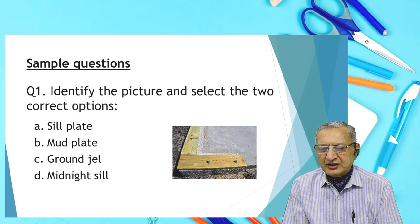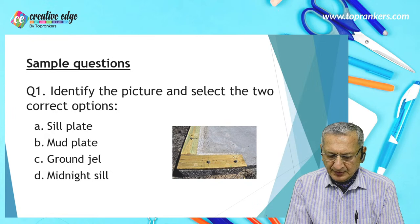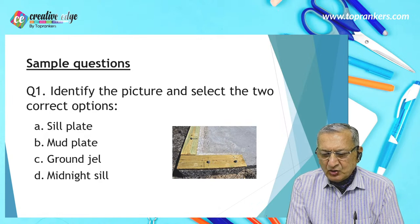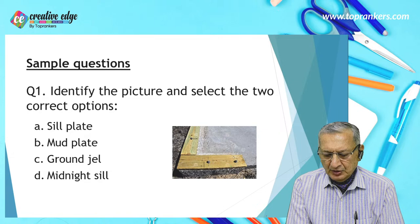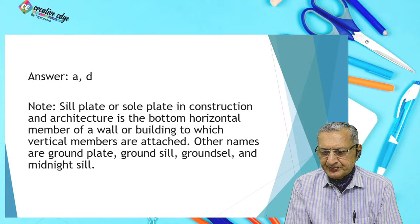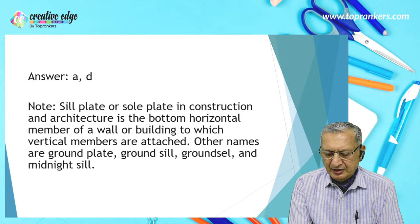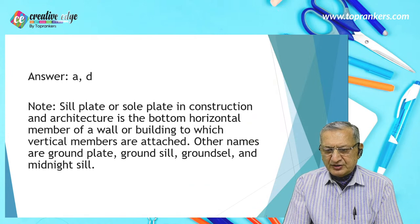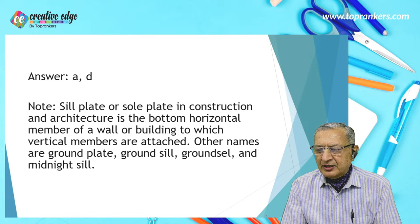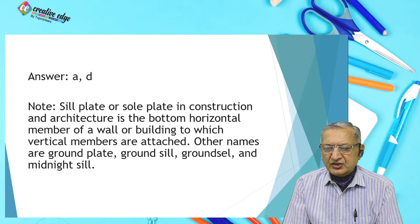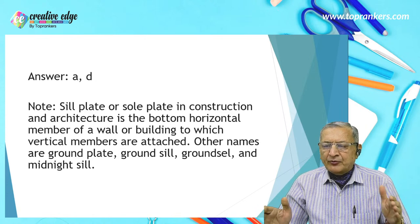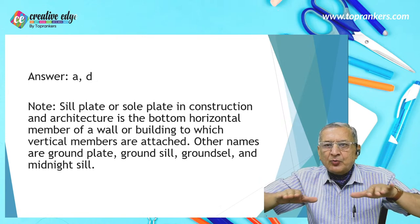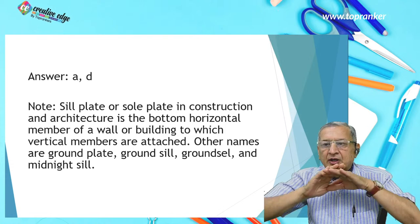Here is a sample question: identify the picture and select the two correct options — silt plate, mud plate, ground gel, midnight silt. The answer is A and D: silt plate and midnight silt. Note that silt plate or sole plate in construction and architecture is the bottom horizontal member of a wall or building to which the vertical members are attached. Other names include ground plate, ground silt, and ground cell.